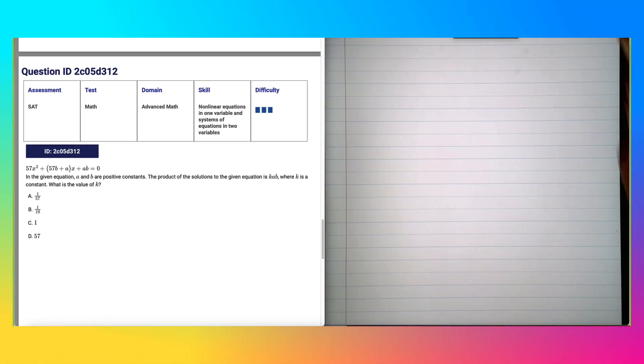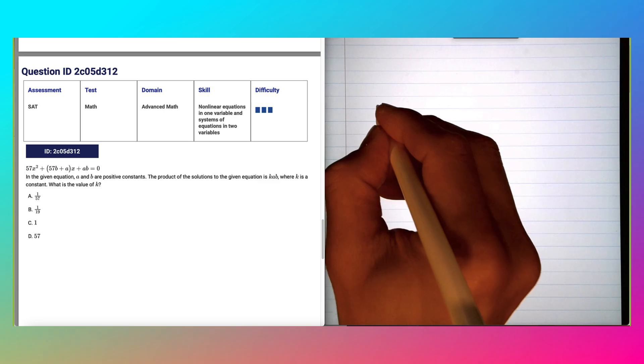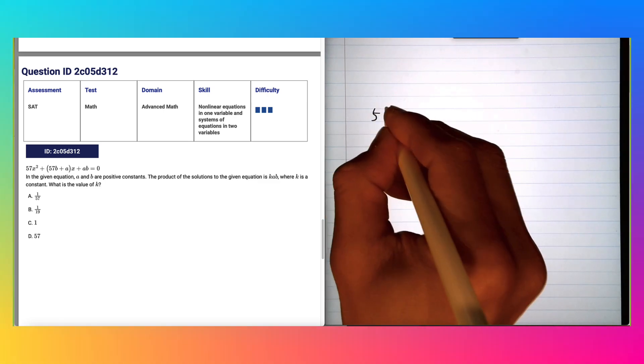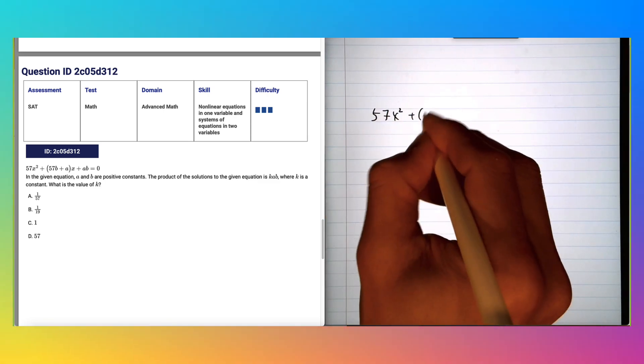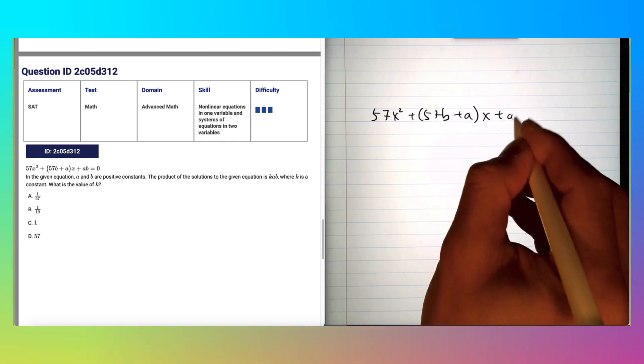Alright, we got something interesting here because you need to know the formula to solve this. So these days we get a lot of quadratic functions. 57x squared plus 57b plus ax plus ab equals zero.